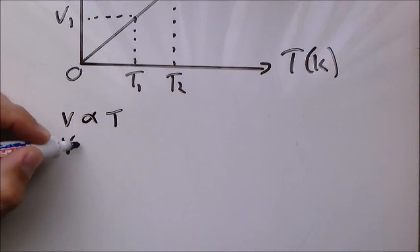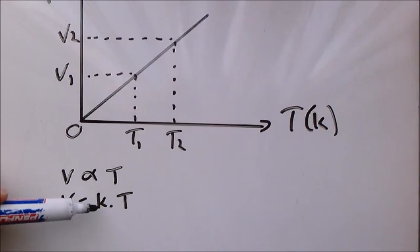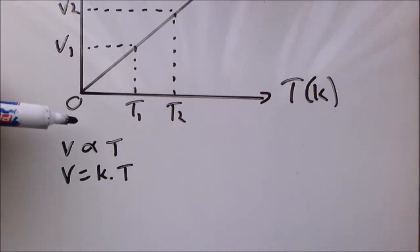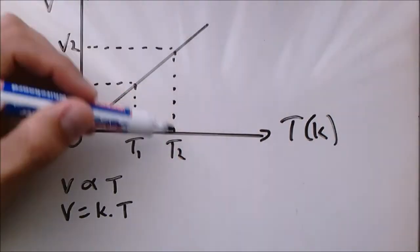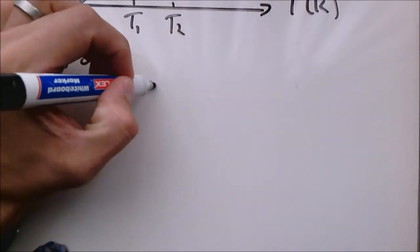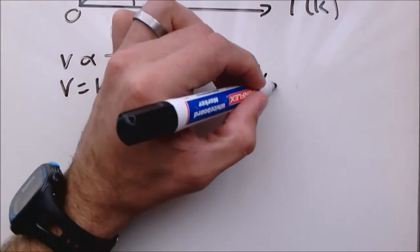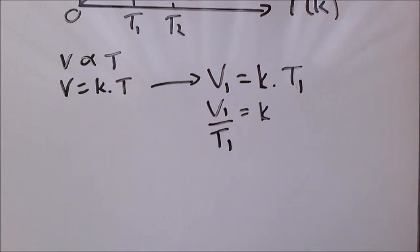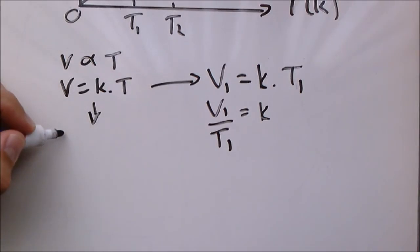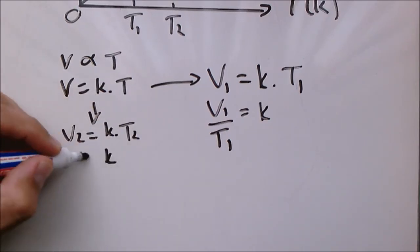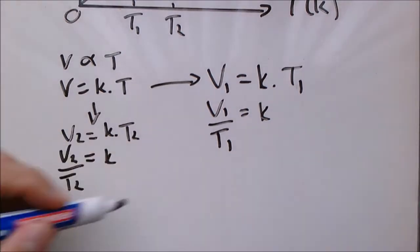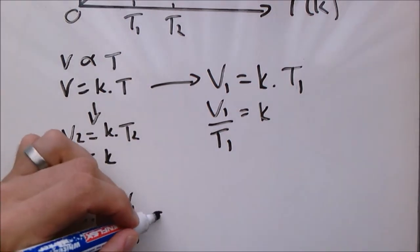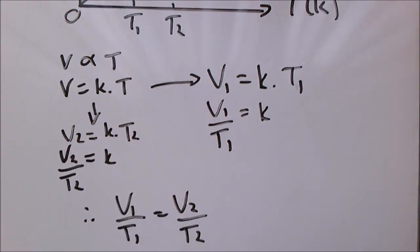If volume is directly proportional to temperature, that means volume equals a constant times temperature, where the constant represents the gradient of the graph. We have two points: V1, V2 and corresponding T1 and T2. So V1 equals K times T1, meaning K equals V1 divided by T1. Similarly, V2 equals K times T2, so K equals V2 over T2. Since both constants are equal, Charles' law gives us: V1 over T1 equals V2 over T2. This is how we apply it in our calculations.